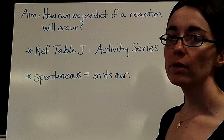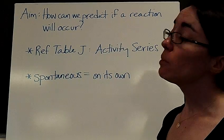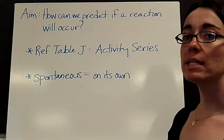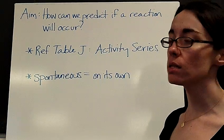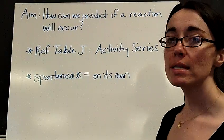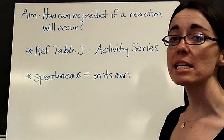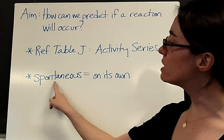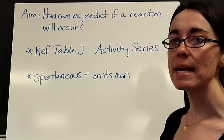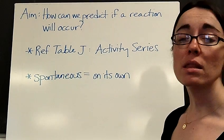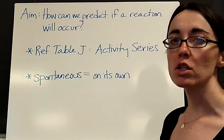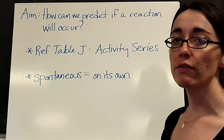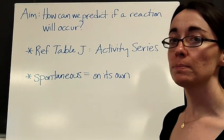Hi there. Our topic for today is how can we predict if a reaction will occur? To participate in this lesson, you need to have reference table J, otherwise known as the activity series — I'm going to teach you how to use that. You should also know the definition for the word spontaneous. Spontaneous means that a reaction will happen all on its own. Spontaneous combustion, for example, is something that will burst into flames all on its own.